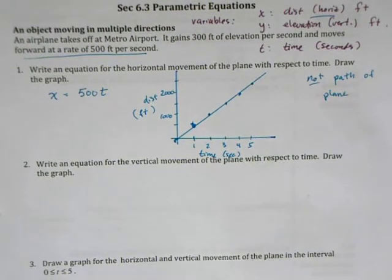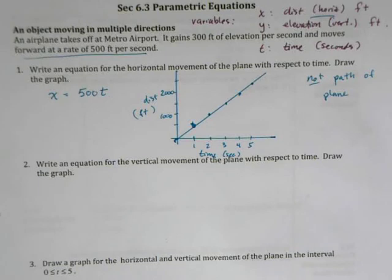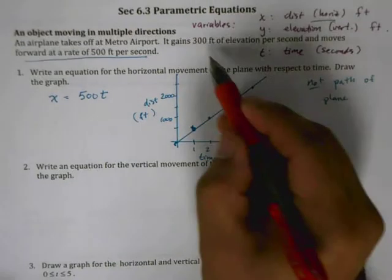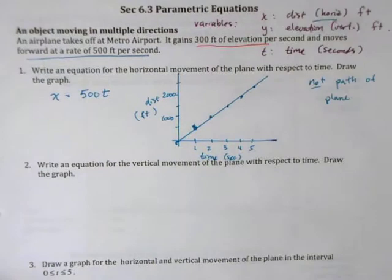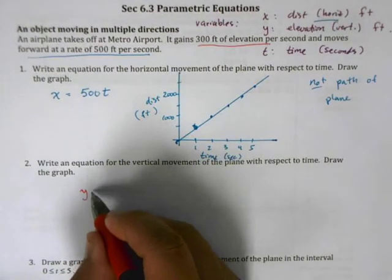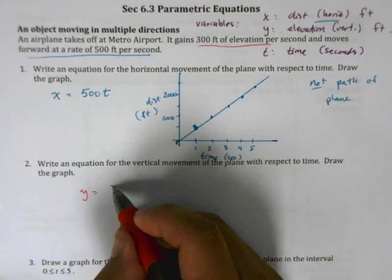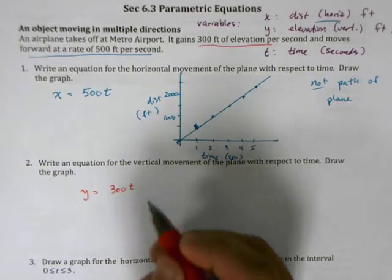Moving on, what is the elevation? This is straightforward: the plane gains 300 feet per second, so y — the vertical distance or elevation — equals 300t.